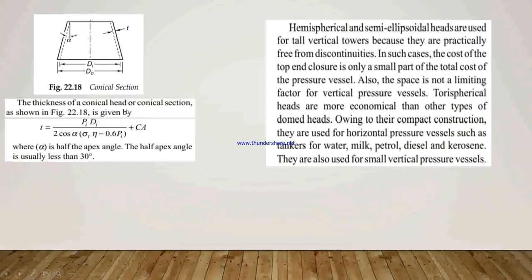Next is the conical section. The thickness of this conical head or conical section is calculated as T = P·Di / (2·cos α·σT·η − 0.6P) + Ca, where α is half the apex angle as shown in figure, which is usually less than 30 degrees. Here Di is the inner diameter and D is the outer diameter.